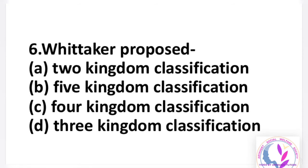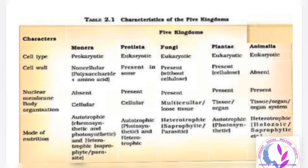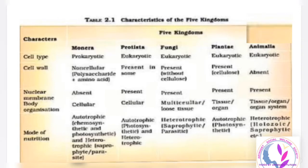We must remember that R.H. Whittaker's five-kingdom classification was based on specific features and characteristics. The characters include: cell structure, thallus organization, mode of nutrition, reproduction, and phylogenetic relationship. In the NCERT chart, the characteristics of the five kingdoms are given as: cell type, cell wall, nuclear membrane, body organization, and mode of nutrition.